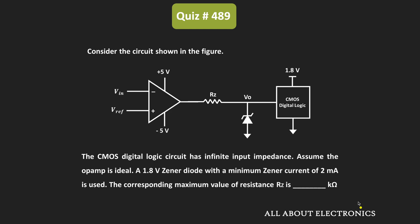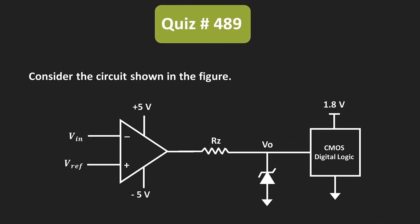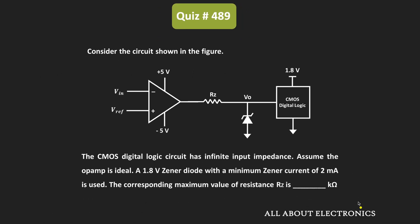In this question, we have been given this circuit. As you can see, through the Zener diode, the output of the op-amp is given to the CMOS logic circuit. The CMOS logic circuit has an infinite input impedance, and the given op-amp is the ideal op-amp. The op-amp is used in the open-loop configuration, which means the op-amp is used as a comparator.